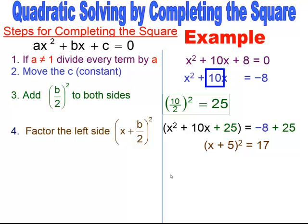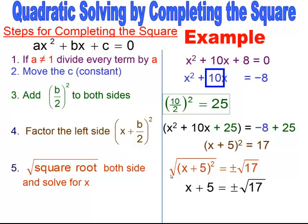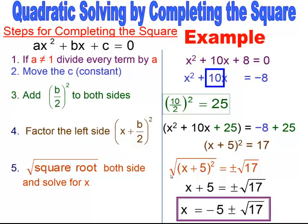Now I have the square root property set up. I square root both sides. The square root of 17 does not simplify, so it stays under the radical. To solve for x, I move the 5 over by subtracting it from both sides. My solution for this quadratic equation is x equals negative 5 plus the square root of 17, and x equals negative 5 minus the square root of 17.